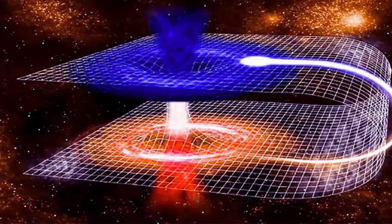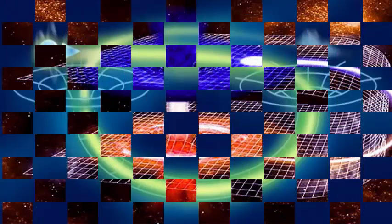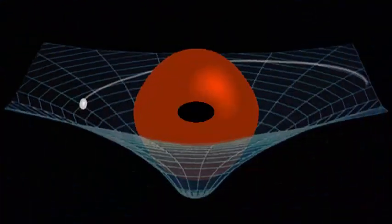We cannot yet construct a space-time machine because we need materials, which we call exotic matter, to bend space-time in these impossible but yet uncovered forms.